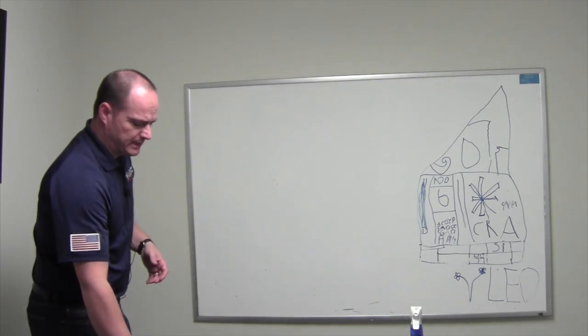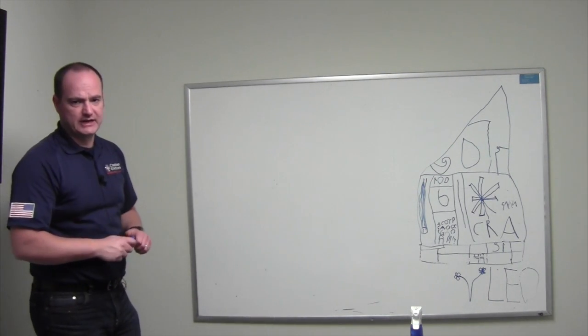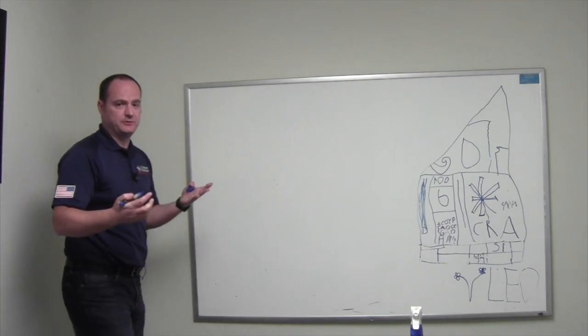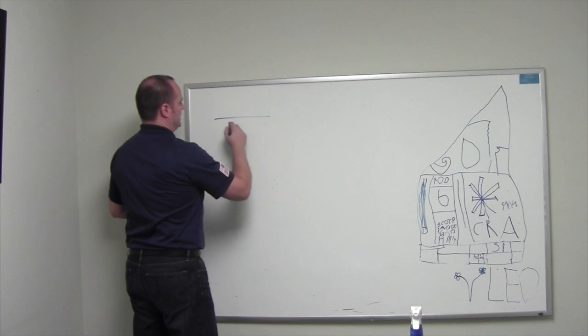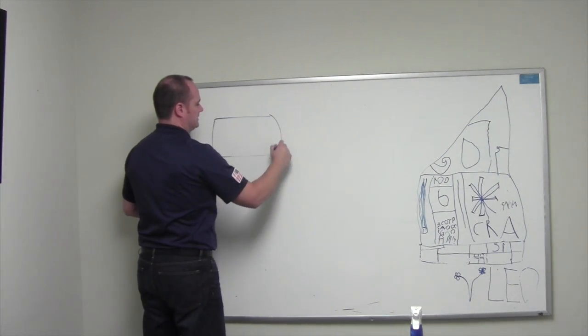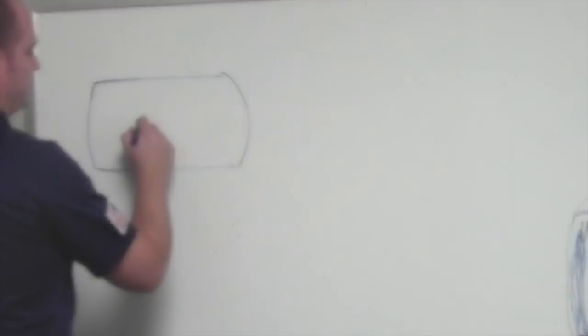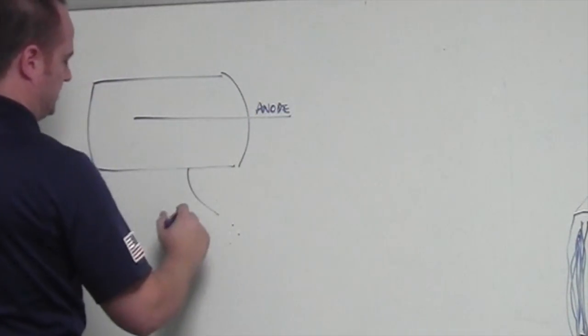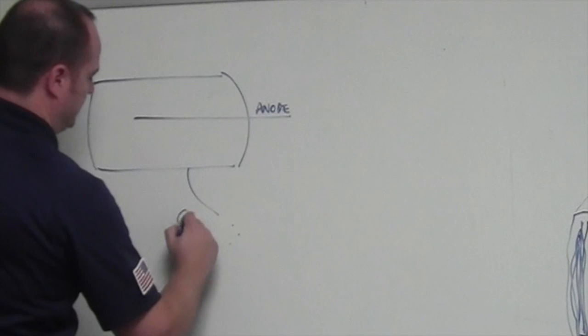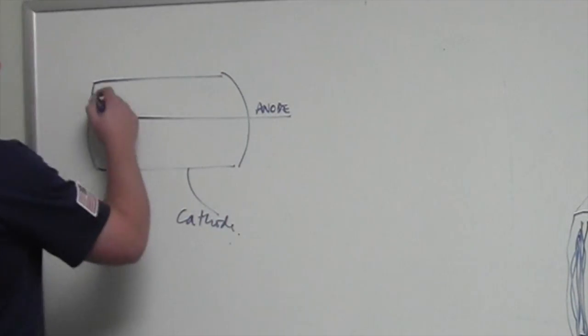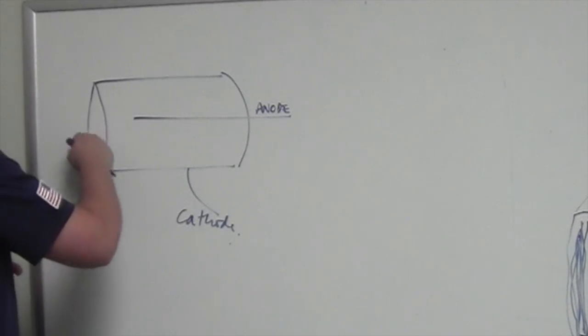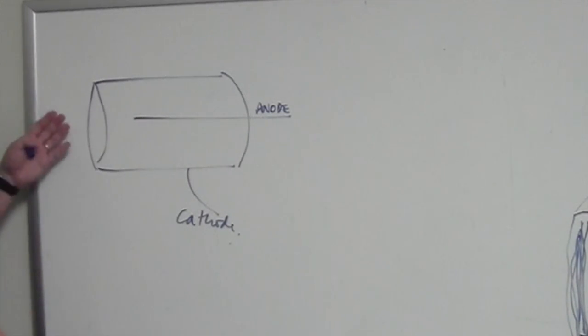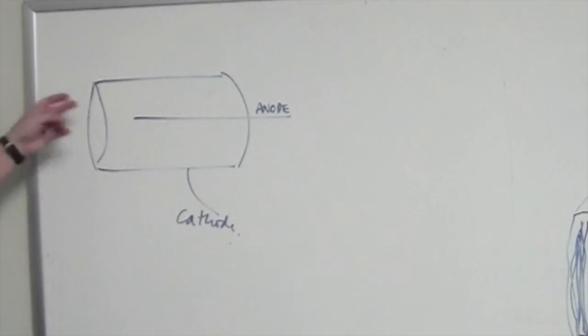So the key component of this radiation detector is the Geiger-Mueller tube. The Geiger-Mueller tube is nothing but a cylinder like this with an internal anode and the shell of the cylinder is the cathode. The end of this cylinder can be made of usually mica or some thin, very low-z material so that beta particles can get inside and maybe even alpha particles can be detected by the GM tube.